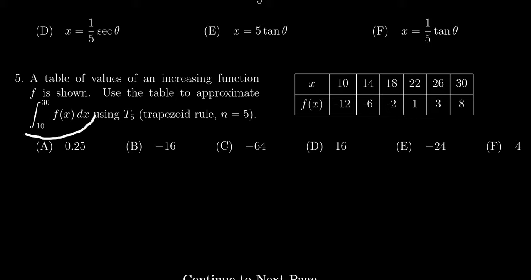Using this table we want to approximate the integral from 10 to 30 of f(x)dx using the trapezoidal rule T5. That is, we're going to use the trapezoidal rule with five subdivisions.